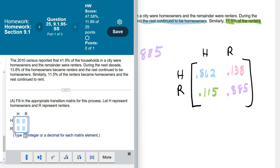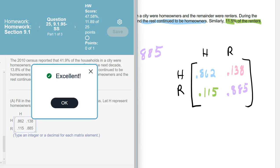Type an integer or a decimal. It doesn't tell me to round off. So, 0.862, 0.138, 0.115, and 0.885. Excellent.